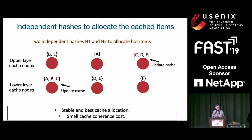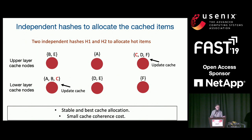We propose using pairwise independent hash functions to allocate cache items. We make sure pairwise independent hash functions are used between layers. For example, CDF hashed by hash function one in the upper layer goes to the third node. If CDF is very hot and overloads that node, we use another pairwise independent hash function in the lower layer to hash the items again. With high constant probability, because they are independent, CDF will be spread out in the lower layer, providing helpers to mitigate the load. Cache coherence cost is also small — you only update one copy per layer.